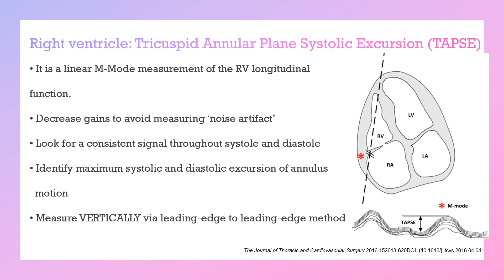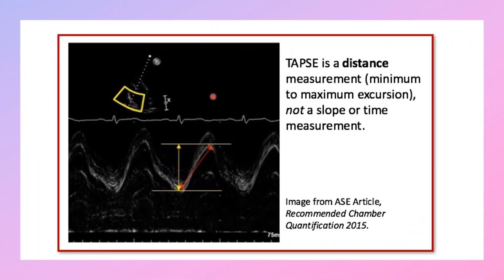For right ventricular function, we measure tricuspid annular plane systolic excursion (TAPSE), a linear M-mode measurement of RV longitudinal function. Place the cursor on the lateral wall of the tricuspid valve annulus, decrease the gain to avoid noise artifacts, and look for constant signals throughout systole and diastole. Identify maximum systolic and diastolic excursion of the annulus motion and measure vertically via the leading-edge-to-leading-edge method. TAPSE is the distance measurement between minimum and maximum excursion — a distance, not a slope or time measurement.